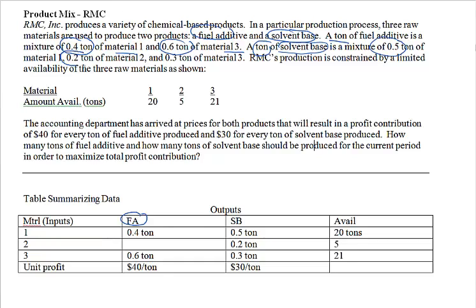We have put those numbers in the fuel additive column: 0.4 ton of material 1 and 0.6 ton of material 3. A ton of solvent base is a mixture of 0.5 ton of material 1, 0.2 ton of material 2, and 0.3 ton of material 3. So those three values — 0.5, 0.2, and 0.3 — are placed in the second column for the solvent base.